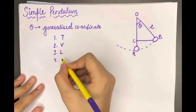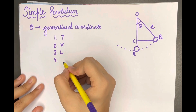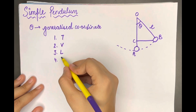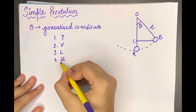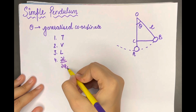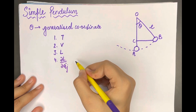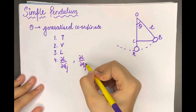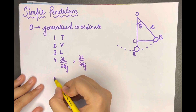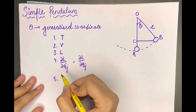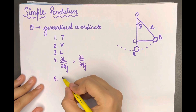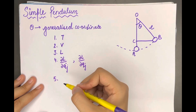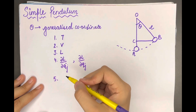The fourth step is to calculate the quantities included in the Lagrange equation of motion, which are ∂L/∂q̇_j and ∂L/∂q_j. The last step is to substitute these into the Lagrange equation of motion to obtain the equation of motion.